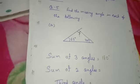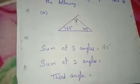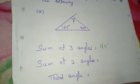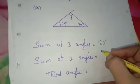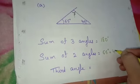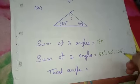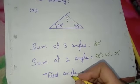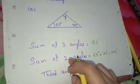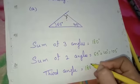As two angles are given — 65 degrees and 40 degrees — we will add both the angles to find the sum of two angles. That gives us 105 degrees. Now, to find the third angle, we subtract the sum of two angles from the sum of three angles.